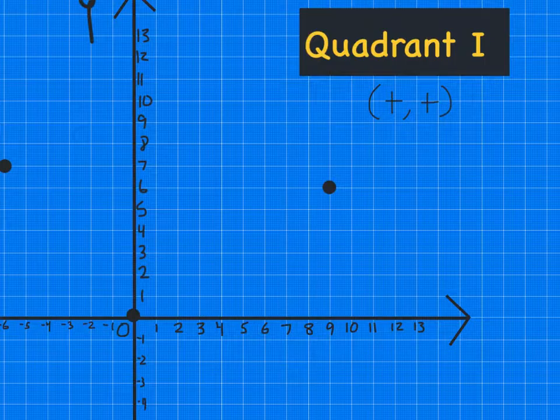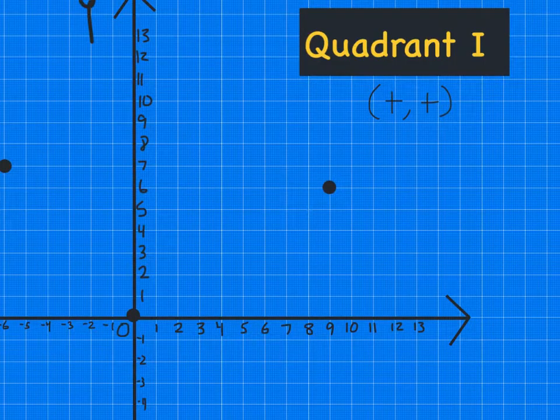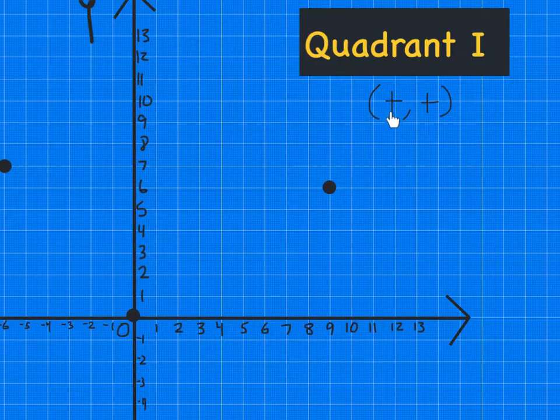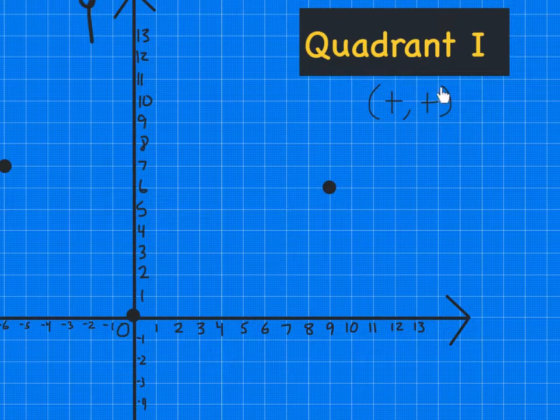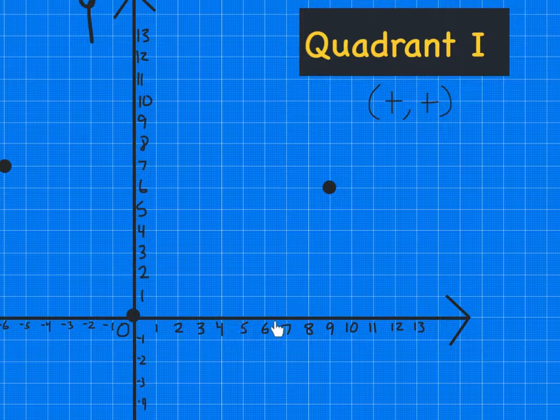So the next step is just writing the ordered pair, which would be what this is up here. This is an ordered pair. So it's a parenthesis, then the x-coordinate, a comma to separate the numbers, the y-coordinate, and a parenthesis.